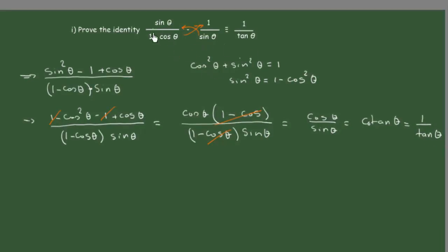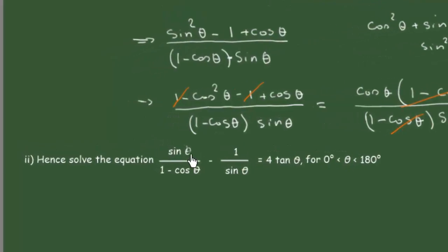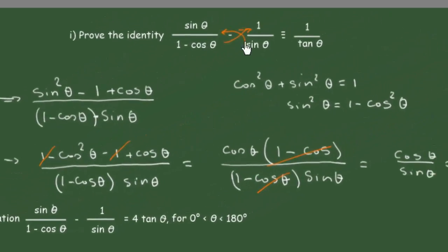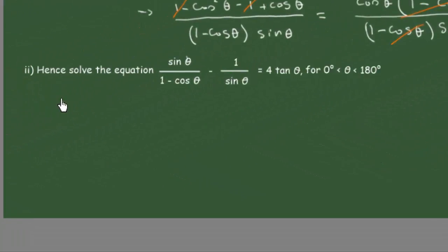So we've shown that the original expression is equivalent to 1 over tan theta. Now we're going to use this to solve the equation: sine of theta over 1 minus cosine of theta minus 1 over sine of theta equals 4 times tan of theta, for theta between 0 degrees and 180 degrees. Since we've proven the left side equals 1 over tan theta, we can write 1 over tan theta equals 4 times tan theta.